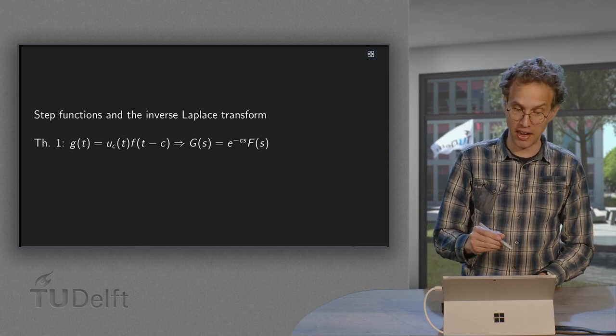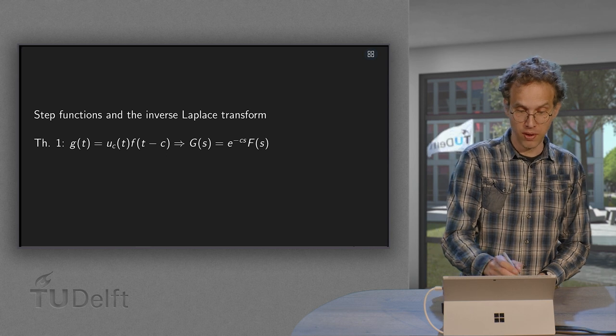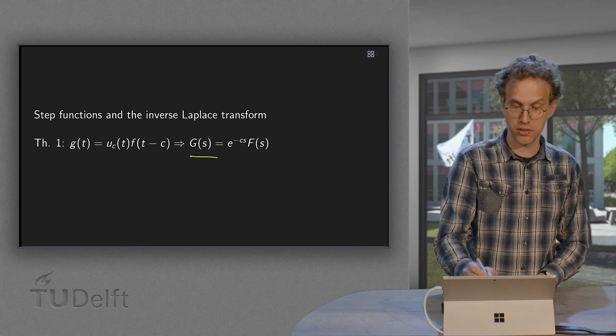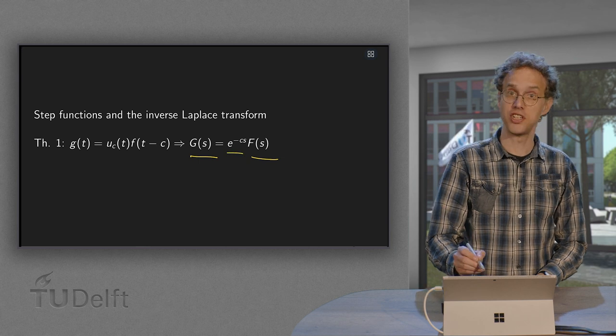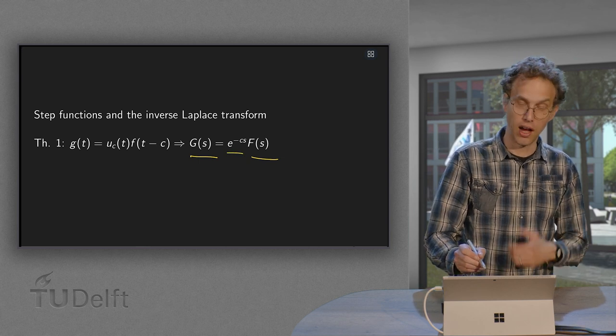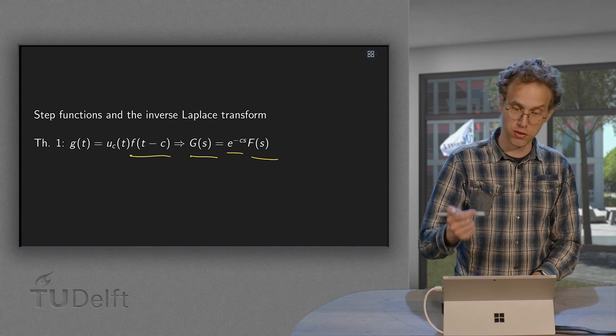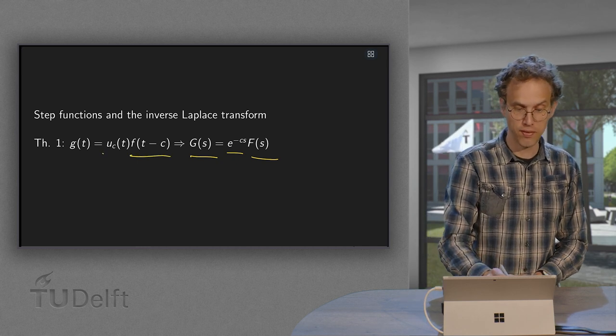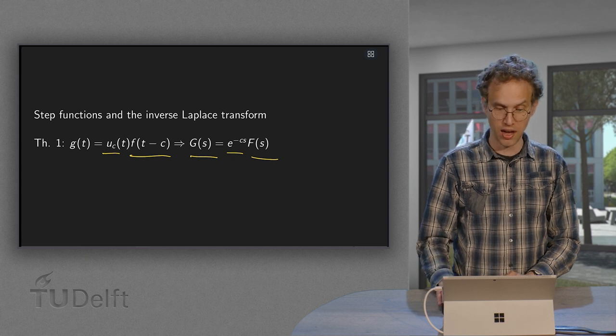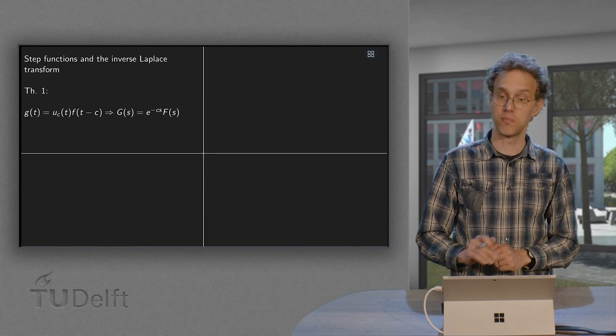Because how do we find our g of t? Well, if capital G of S equals capital F of S times e to the power minus CS, then how do we find our g of t? We need our small f of t minus C, and we multiply by our step function. So how does this work in practice?